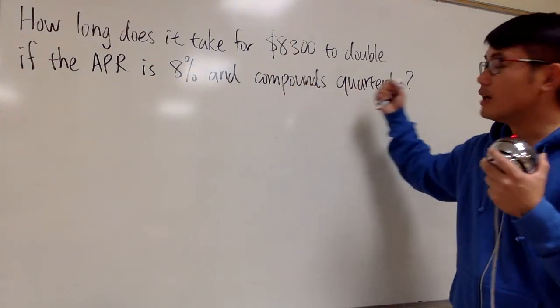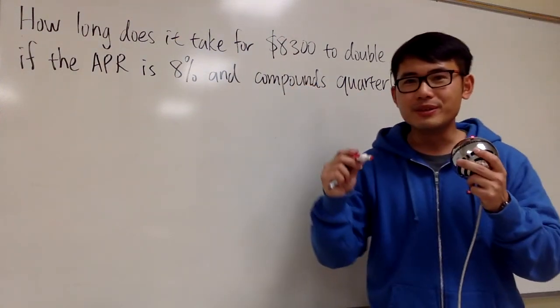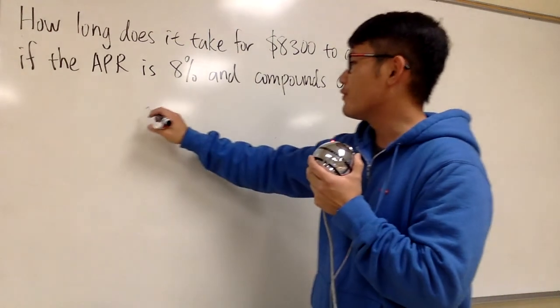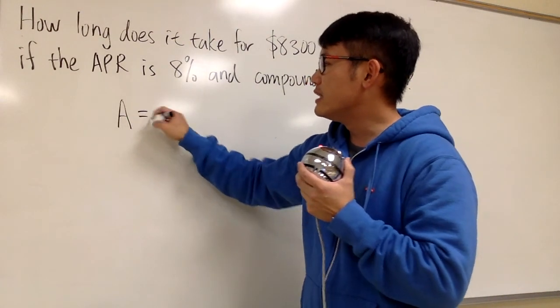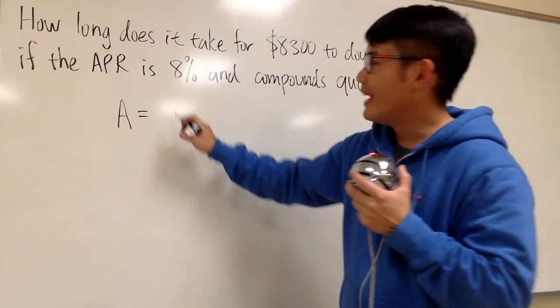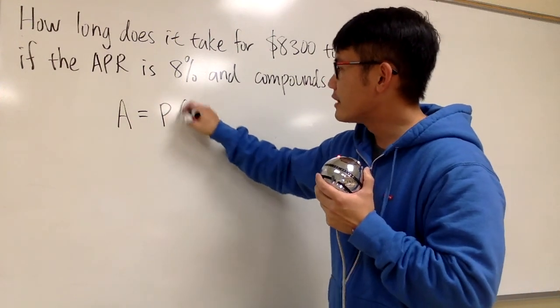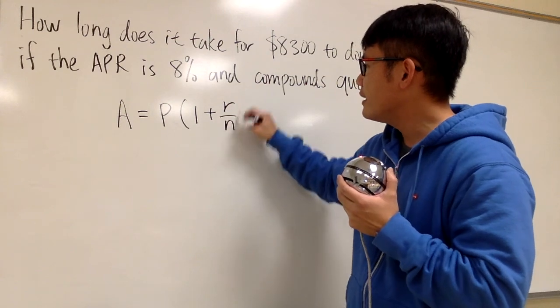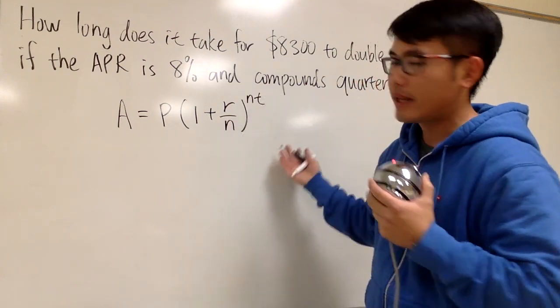Because it compounds quarterly, we have to use the compound interest formula. Let me write this down for you guys. A stands for the amount that we are going to get, and this is equal to P times 1 plus R over N raised to the Nt power.